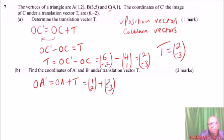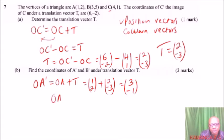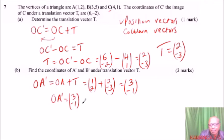So 1 plus 2 gives 3, and 2 plus (-3) gives -1. That is the position vector of OA prime, which is (3, -1). To get the coordinates, you write that in linear form. So A prime is (3, -1).